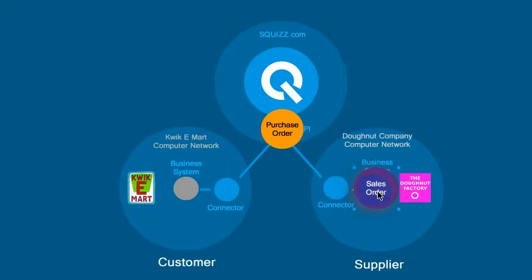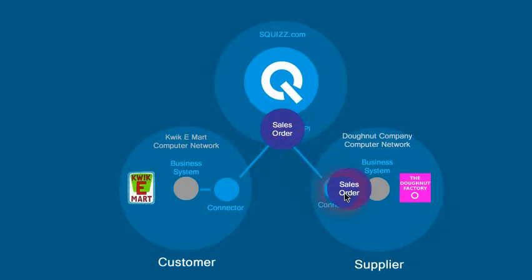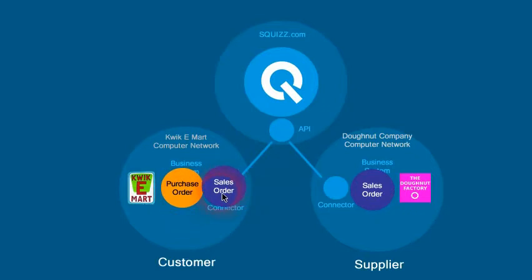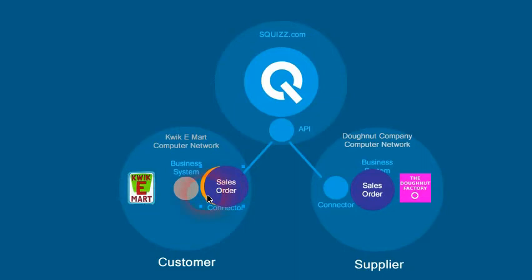Once that's done, the sales order when it is transferred across from Squiz has a copy of it — so the sales order goes into the Donut Factory system and the sales order then gets returned back to the connector. That sales order can be viewed as well as used to update the original purchase order within the connector software, which can then potentially import that purchase order back into the system with the most accurate and up-to-date pricing and details.